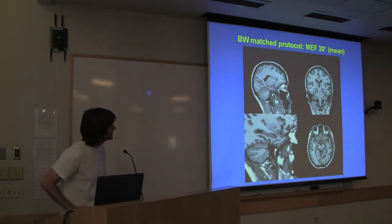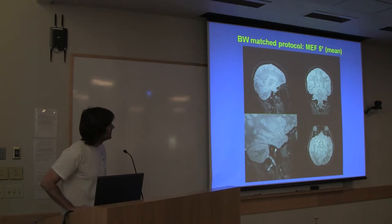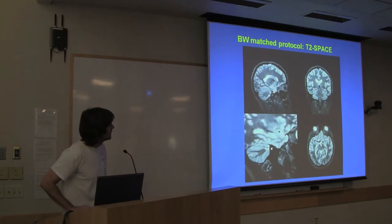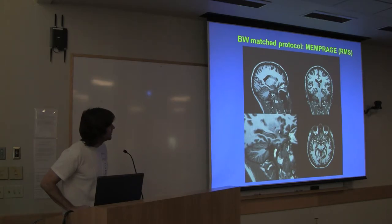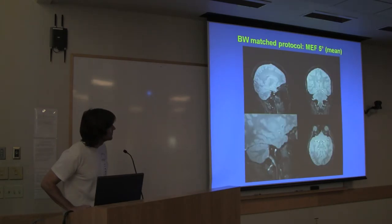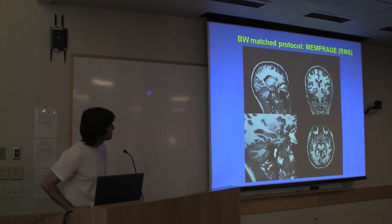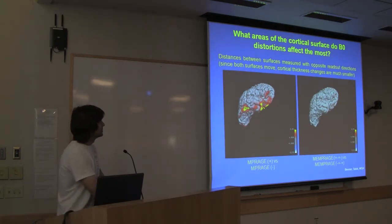So, here's an example of a 30 degree FLASH with T1 weighting. Here's a PD weighted 5 degree FLASH. T2 SPACE and MPRAGE. So, if I flip between them, you can see they're all nicely aligned. This slide shows what regions of the surface are affected by these distortions. It's the areas that you know very well around the air cavities, temporal, inferior frontal areas, so all susceptibility areas. And these displacements that occur with a low bandwidth can be much diminished if you use high bandwidth and multiple echoes.